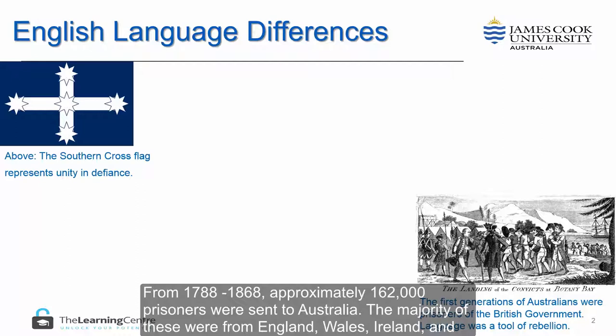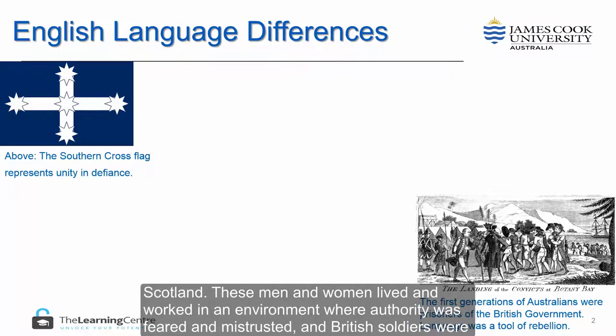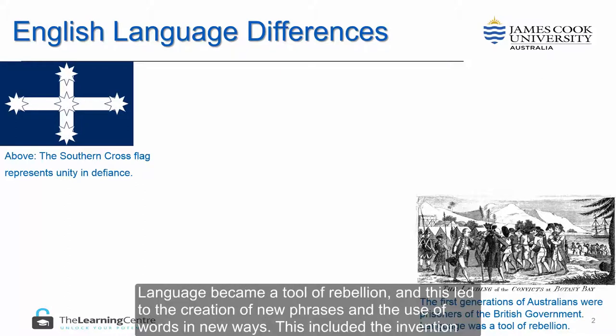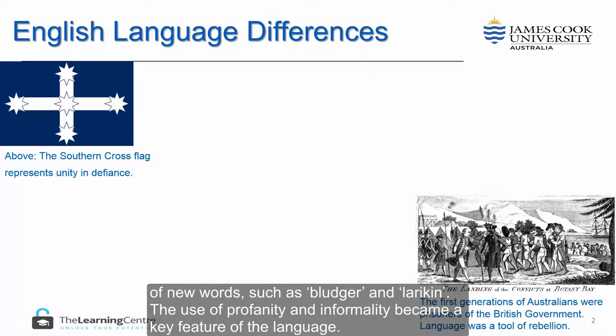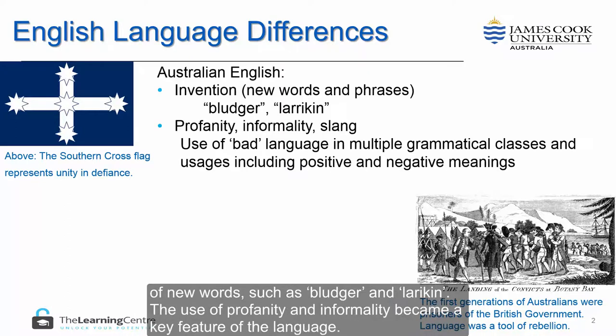The majority of these prisoners were from England, Wales, Ireland, and Scotland. These men and women lived and worked in an environment where authority was feared and mistrusted, and British soldiers were considered the enemy. Language became a tool of rebellion, leading to the creation of new phrases and the use of words in new ways, including the invention of new words such as 'bludger' and 'larrikin'.